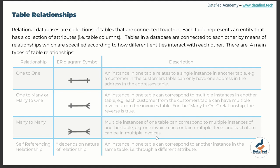The last type of relationship is called self-referencing relationship. This is when a particular table is related to itself — one instance in a table corresponds to another instance in the same table through different attributes. I'm going to show you the different relationships that exist among the tables making up the Chinook database in the next slide.